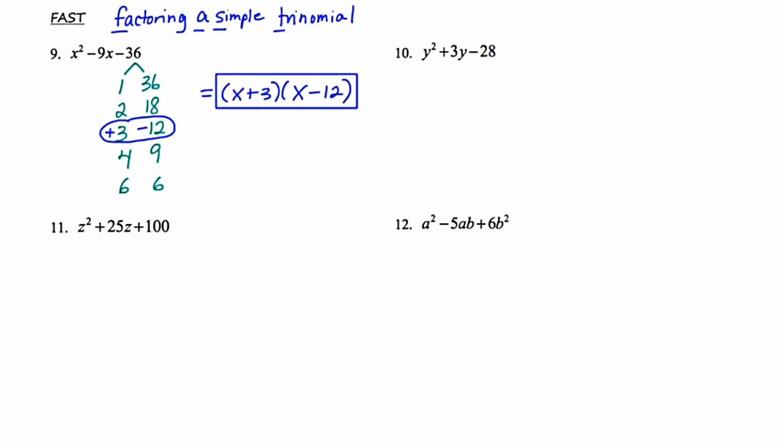Let's try number 11 as a second example. Again, I'm going to start by focusing on the constant at the end, which is 100, and create a very organized list of all the factor pairings of 100. That list includes 1 and 100, 2 and 50, 4 and 25, 5 and 20, and 10 and 10. Of those pairings, I have to pick the one that gives a sum of 25 — the linear coefficient — and that's going to be 5 and 20.